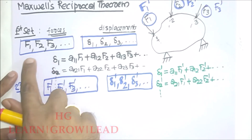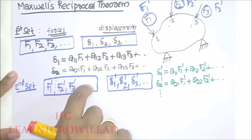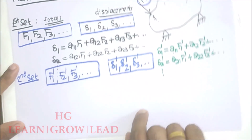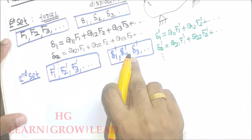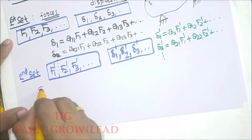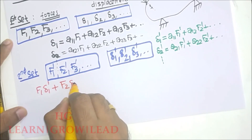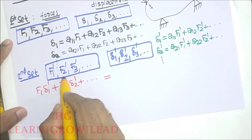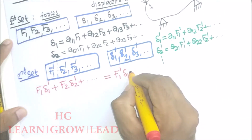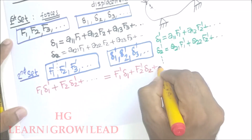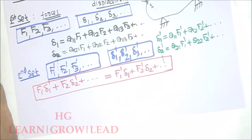The work done by the first set of forces on the second set of displacements is equal to the work done by the second set of forces on the first set of displacements. In other words: F1·delta1' + F2·delta2' + etc. must equal F1'·delta1 + F2'·delta2 + etc. This is the statement of Maxwell's Reciprocal Theorem.